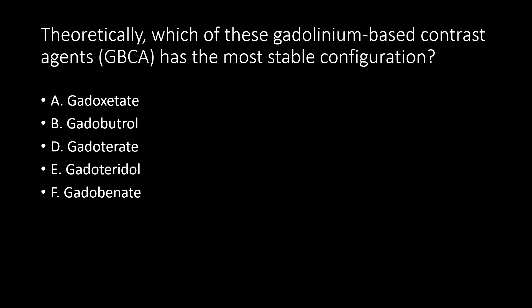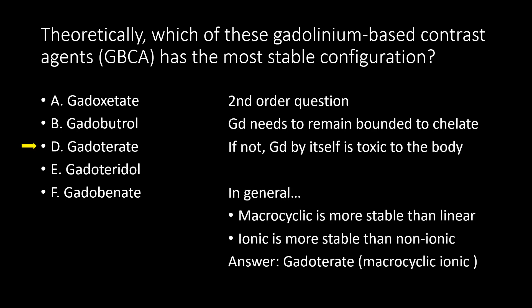Theoretically, which of these GBCAs has the most stable configuration? This is a little extra, a second-order question. Gadolinium needs to remain bound to a chelate; if not, gadolinium by itself is toxic to the body. In general, macrocyclic compounds are more stable than linear, and ionic is more stable than non-ionic. So the answer is the macrocyclic ionic compound, gadoterate. In reality, this was demonstrated in vitro but not really proven in humans.